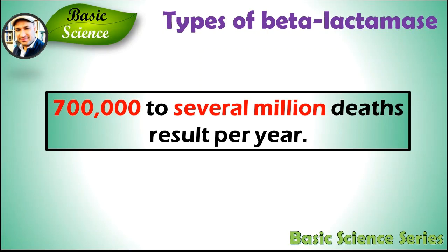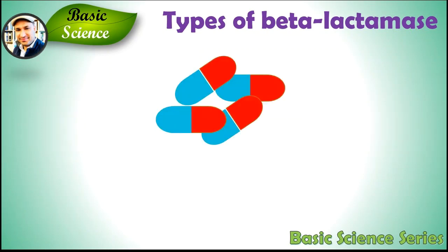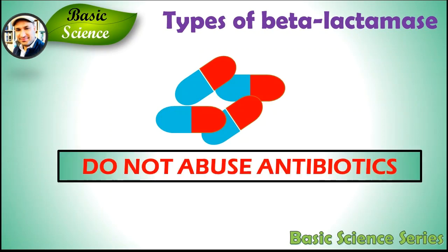Estimates say that 700,000 to several million deaths result per year due to antibiotic resistance, mainly due to the action of these enzymes making antibiotic therapy ineffective. New variants of these enzymes are evolving due to random mutations — the more we misuse antibiotics, the more enzymes will be produced. Concerningly, bacteria are now found to be resistant to even the last-resort antibiotics, meaning if you get infected with that particular bacteria, there may be no treatment option available. However, we can slow down the evolution of antibiotic resistance by avoiding the misuse of antibiotics.